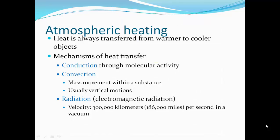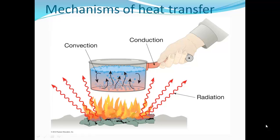Atmospheric heating: heat is always transferred from warmer to cooler objects. Mechanisms of heat transfer are conduction, through molecular activity — touching a hotter material transfers heat energy; convection, the mass movement within a substance, usually vertical motions, like water heating up and rising in convective cycling; and radiation, which is electromagnetic radiation traveling at about 300,000 kilometers or 186,000 miles per second in a vacuum — the speed of light. Heat from a fire, for example, travels outward as radiation at the speed of light.